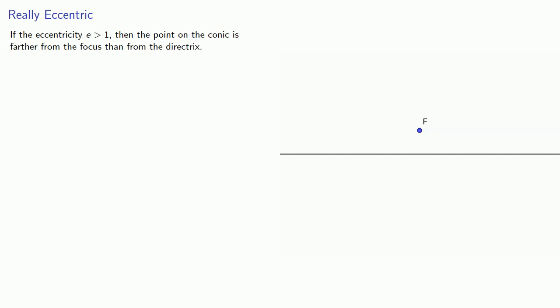Remember if the eccentricity is greater than one, then the point on the conic is farther from the focus than from the directrix, and this produces a hyperbola.